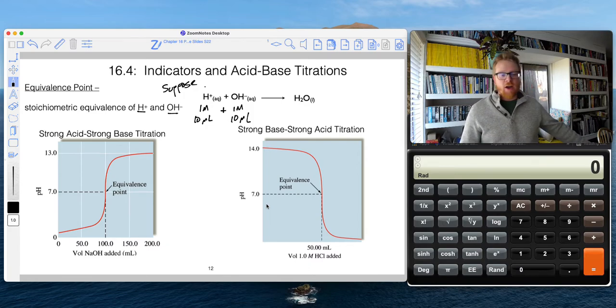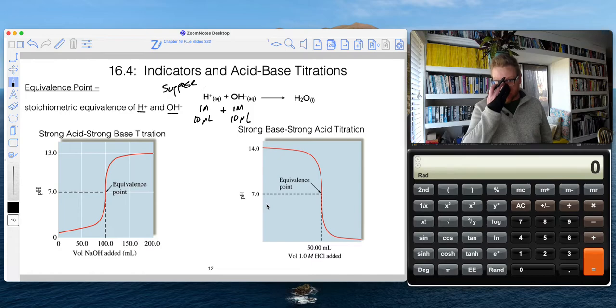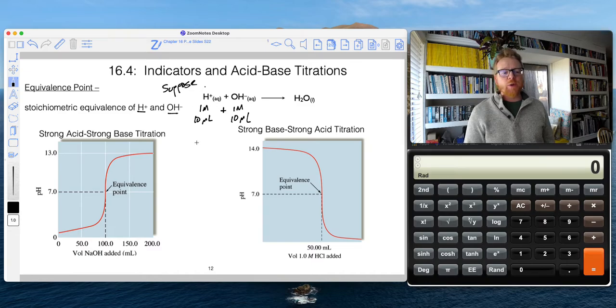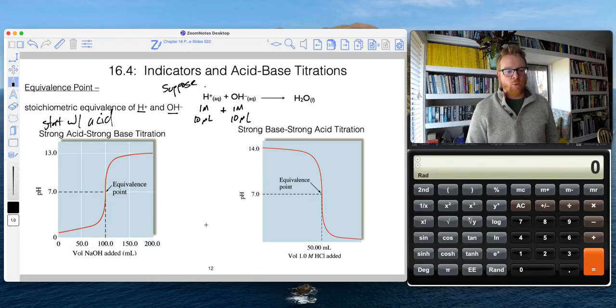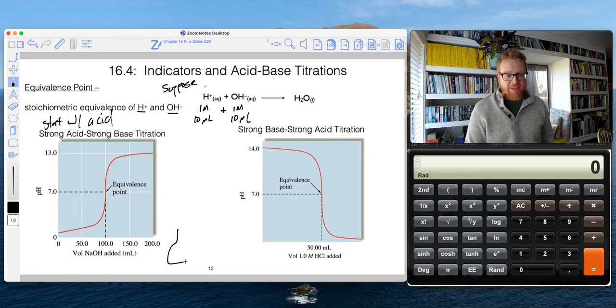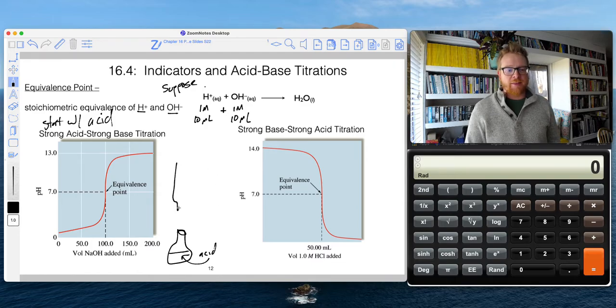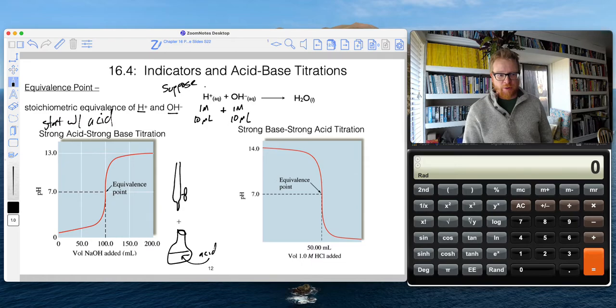We do a titration often because we might not know the concentration of our base or acid, for example. So suppose we were starting with an acid with an unknown acid concentration. Well, that means that if you recall, my acid would be in this little Erlenmeyer flask. And my base would be in the burette, right, that has the little stopcock valve. And if you recall, you dripped that solution in.